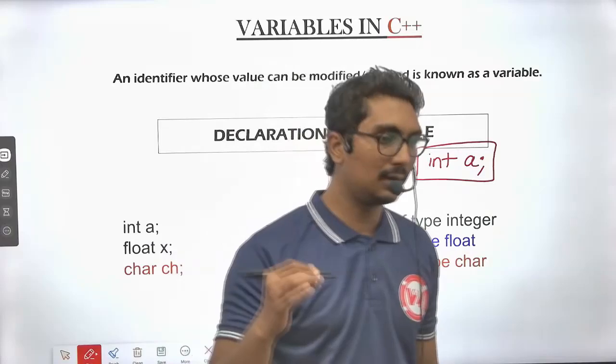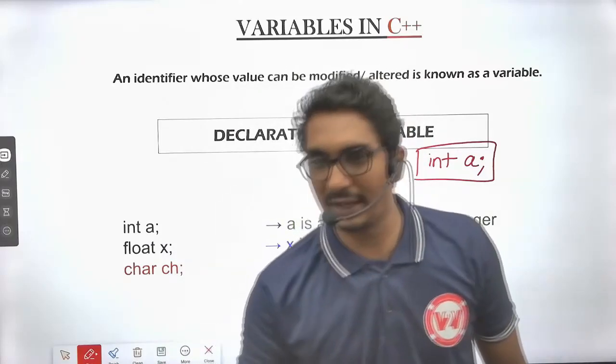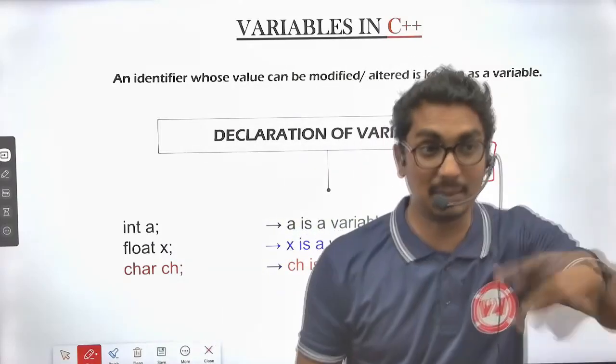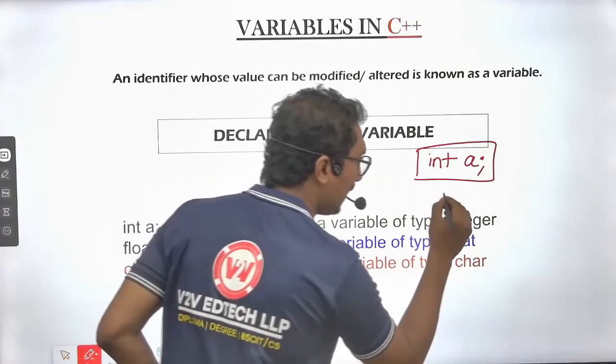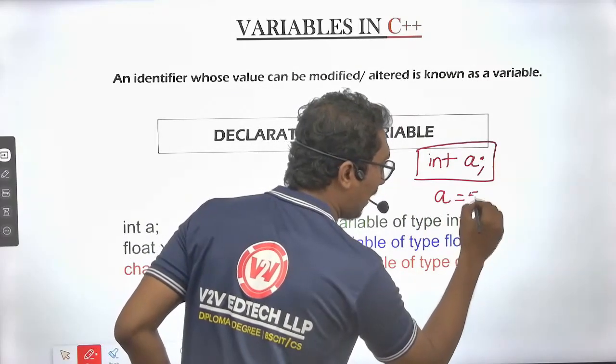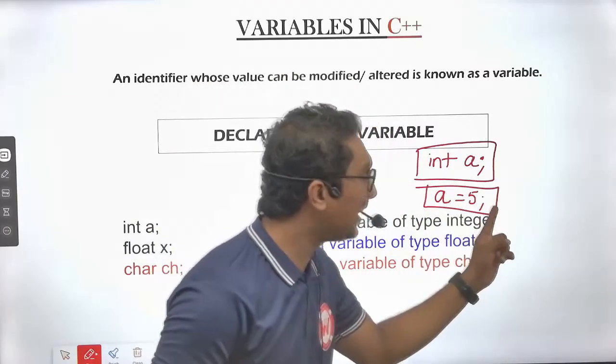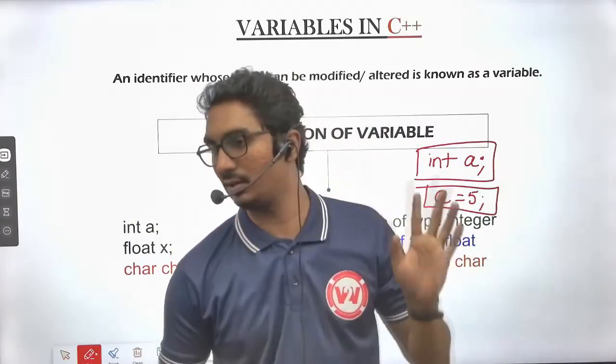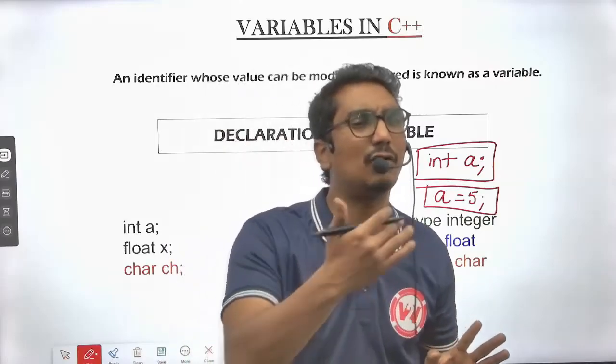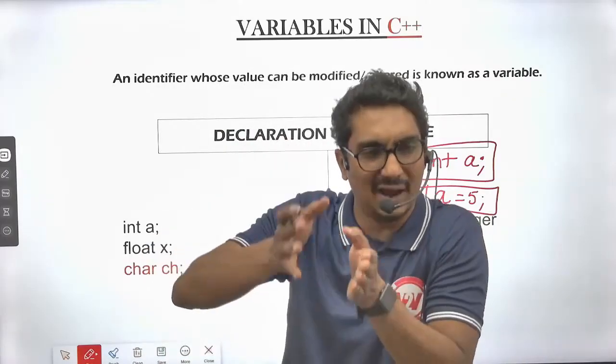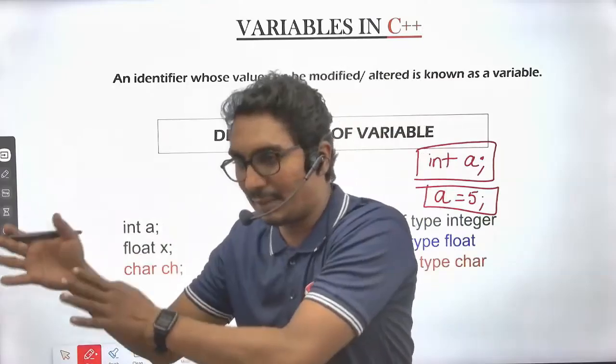Variable declaration. I have written a equals 5 semicolon. Variable initialization or assignment of variable or assigning 5 value to the variable a.